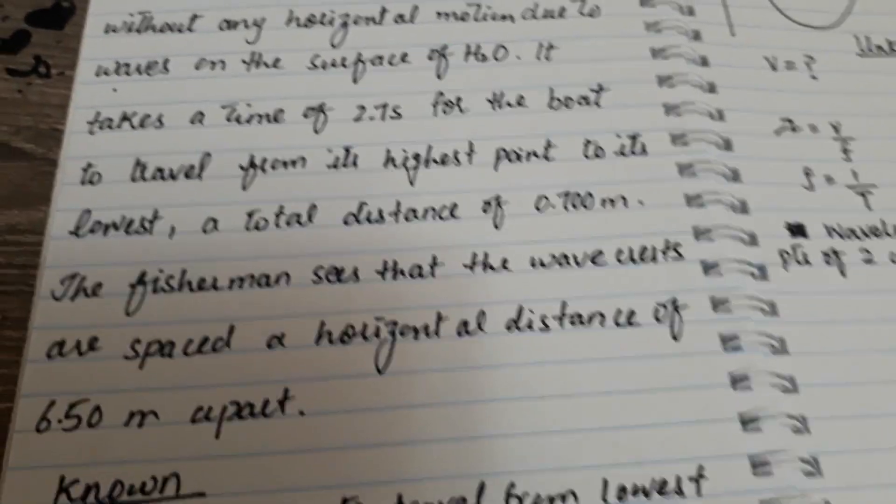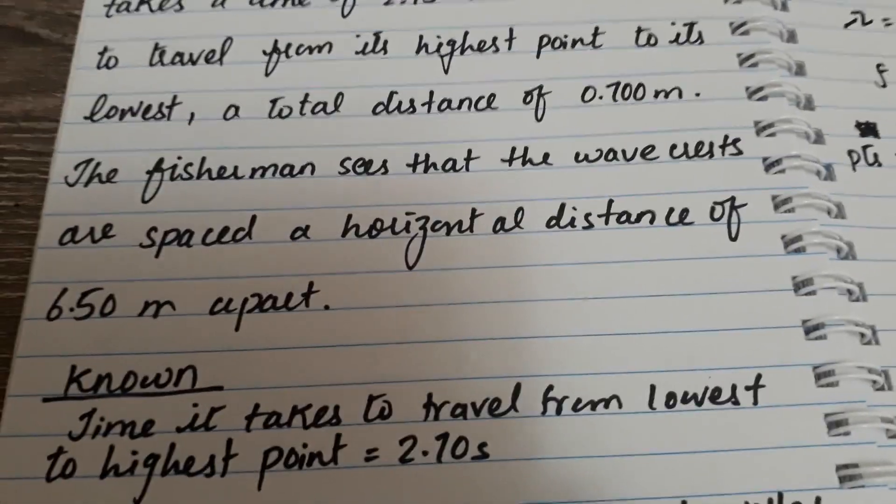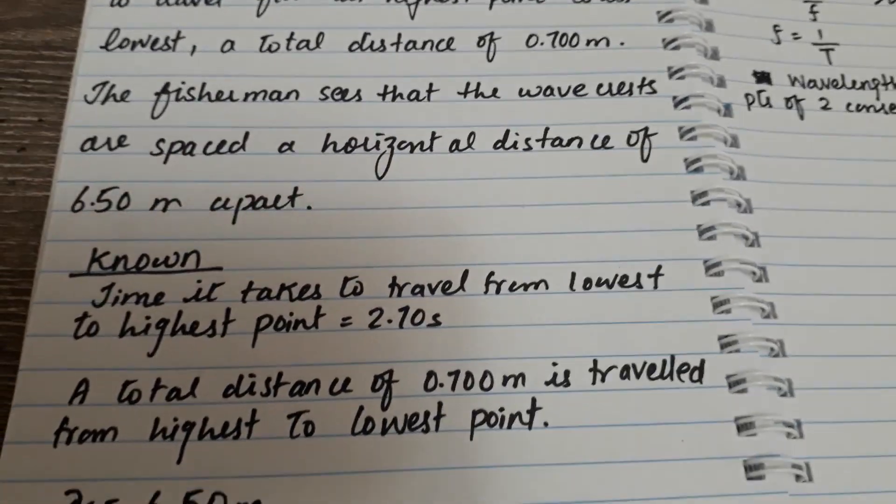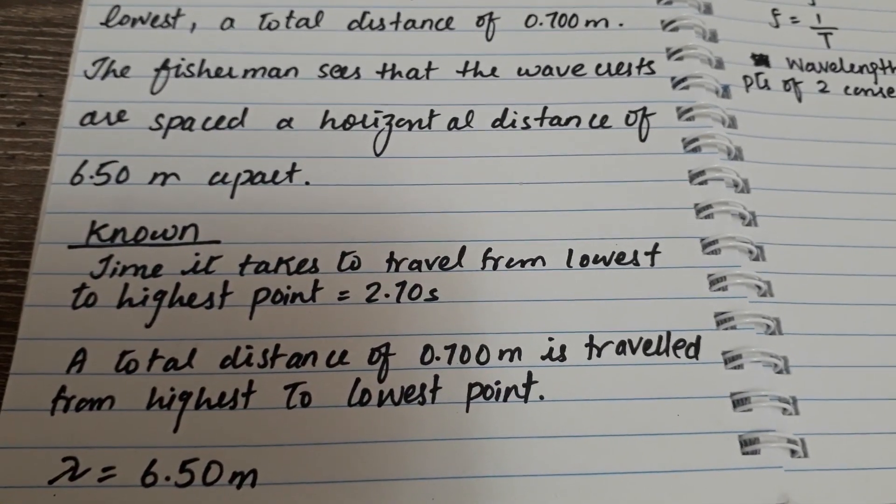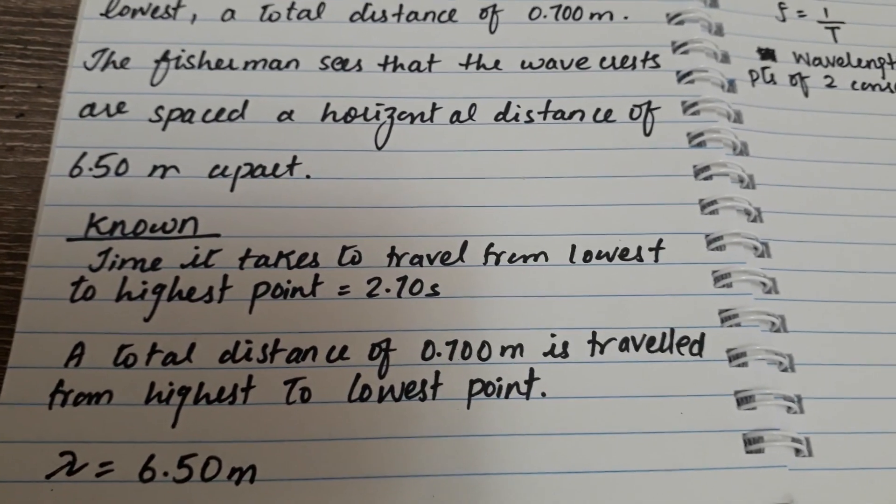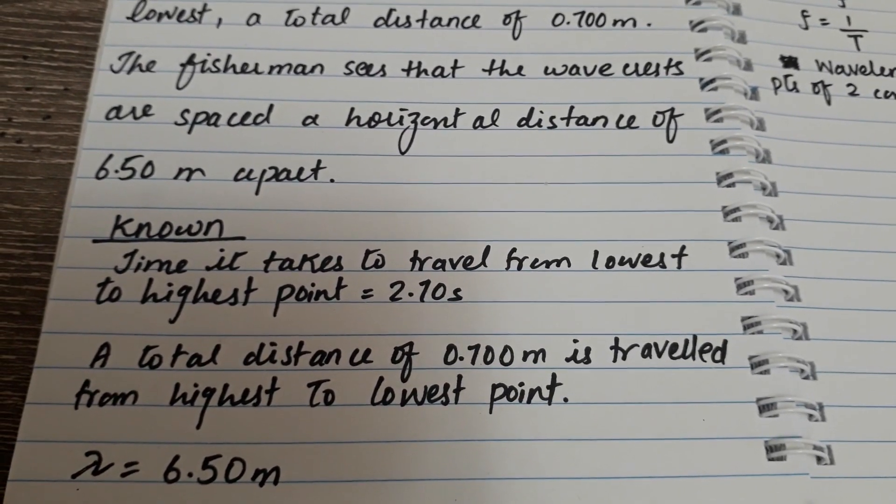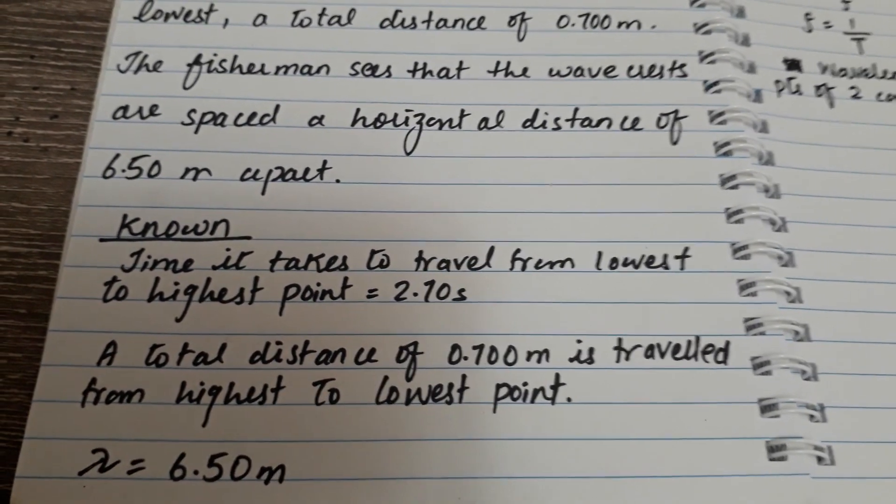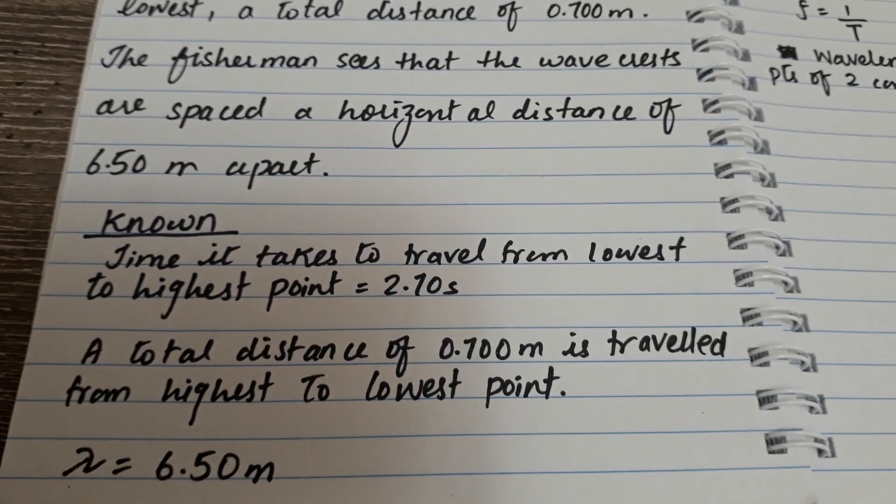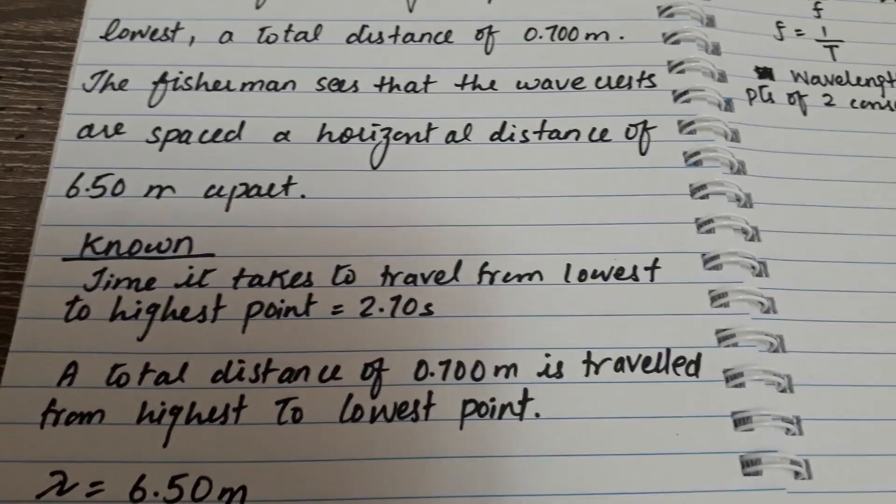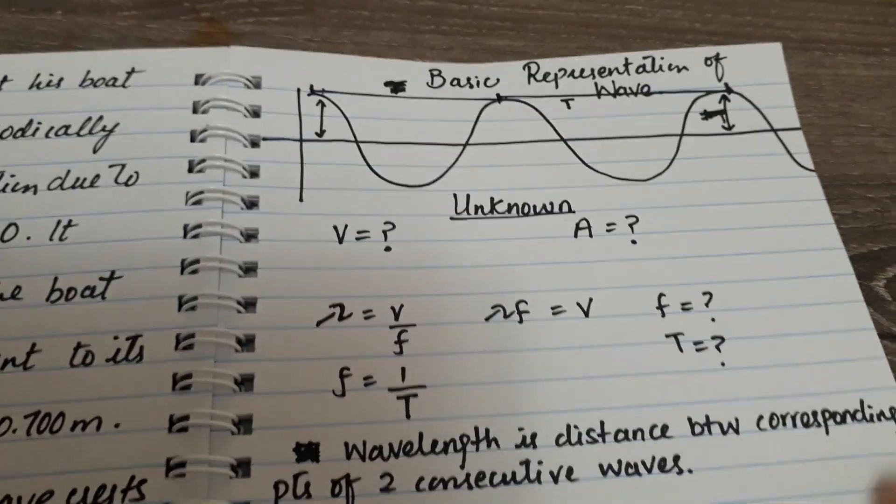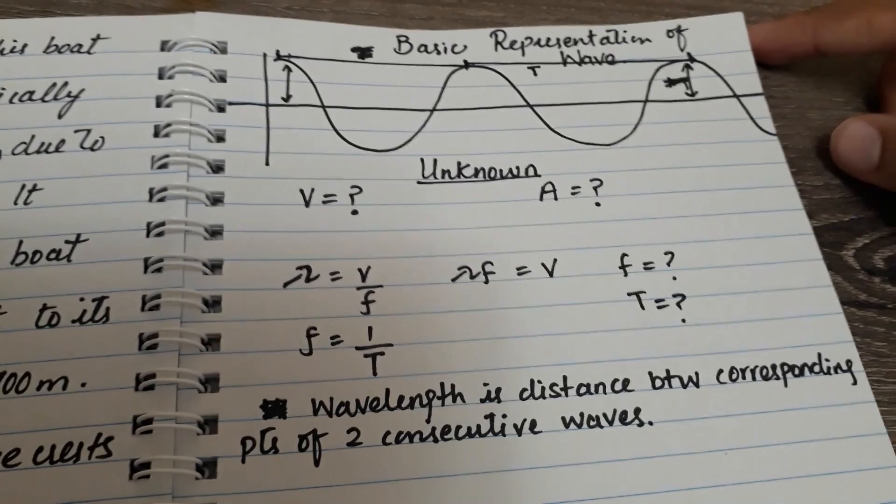Here are my known values: the time it takes to travel from lowest to highest point equals 2.7 seconds, a total distance of 0.7 meters is traveled from highest to the lowest point, and the wavelength given in the question is 6.5 meters. I have this basic representation of a wave, and I know that the amplitude is from here to here, from the crest to the equilibrium position.